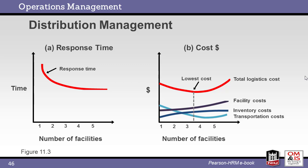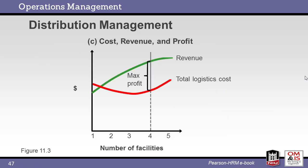A common question for distribution managers is how many warehouses to maintain. Fewer sites cost less but are further away from customers on average — this is a matter of response time versus cost. Total cost includes the facility, inventory, and transportation cost. The lowest point in the total cost curve points to the answer of three locations. The last step in the analysis is to consider the revenue associated with each choice. This graph indicates that the most profit is found when four locations are considered.